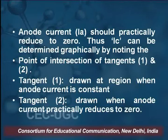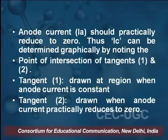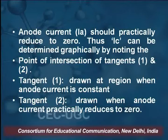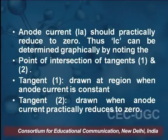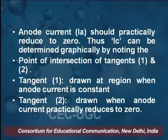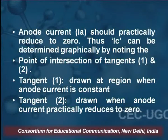Thus, Ic can be determined graphically by noting the point of intersection of the tangents. The first tangent is drawn at the region where the anode current is constant, and the second tangent is drawn when the anode current is practically reduced to zero.